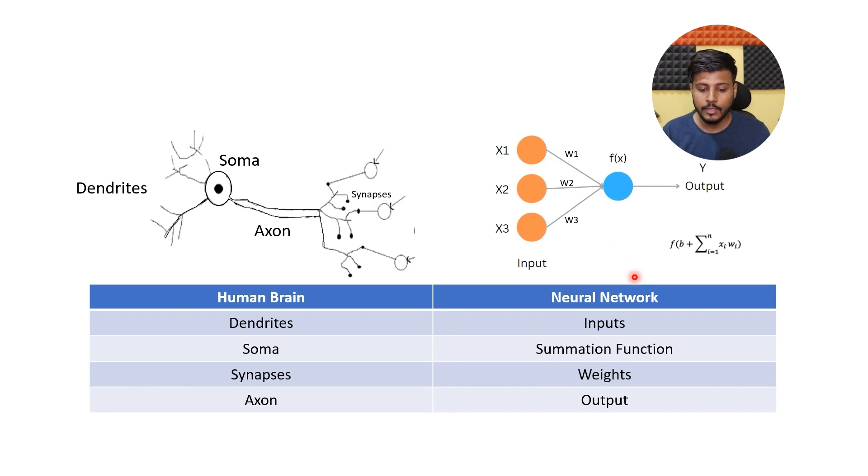In a Neural Network, connections between the artificial neurons transmit signals from one neuron to another just like synapses.